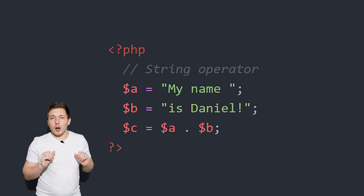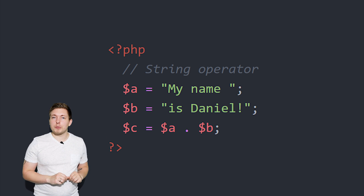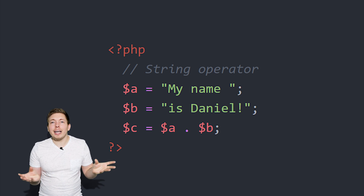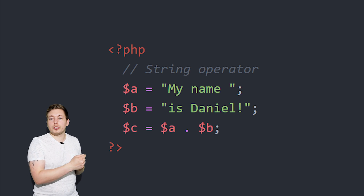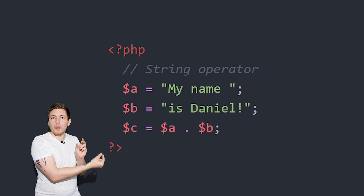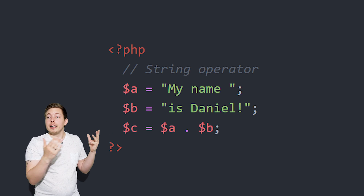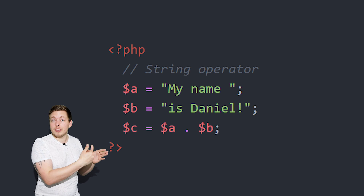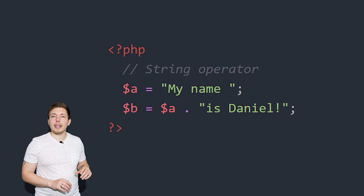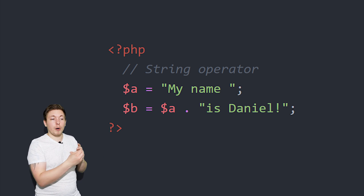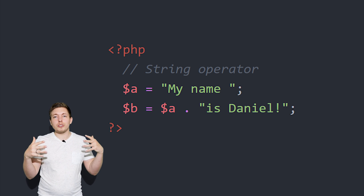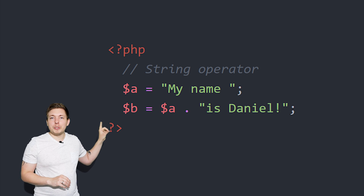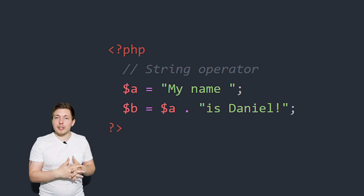Finally, we have the string operator. If you have variable a set to a string and variable b set to another string and you want to combine them, you create variable c and use a dot between the two variables to concatenate them into one. If a and b had been numbers like 1 and 2, this would result in 12, but since we're using strings, they'll form a complete sentence. You can also combine a variable directly with a string literal using the dot. This is very useful when outputting things in the browser, such as with an echo statement. We'll be using this dot symbol to add things together quite often in PHP.